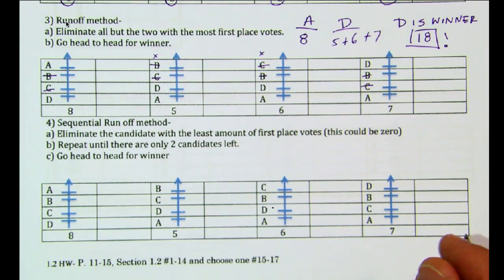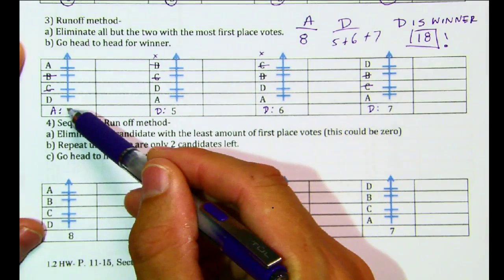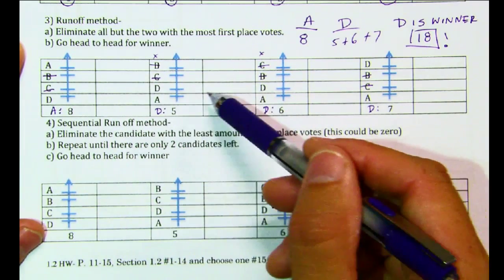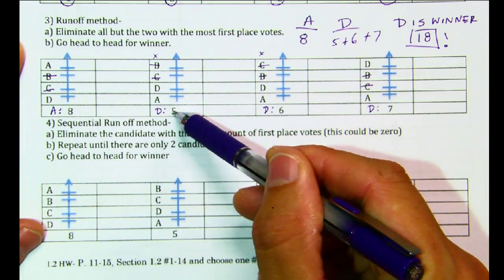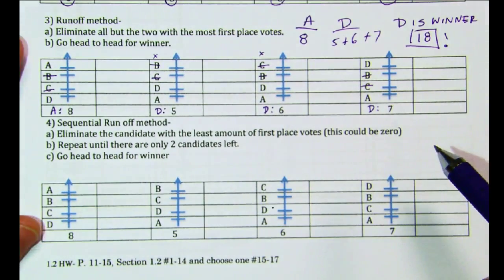You eliminate the two. Well, it depends how many candidates you have. But you leave only two at the end to go head to head. You eliminate all the other ones that have the least amount of first place votes. A is above D here. They get the eight votes. And D is above A here, five votes, and so on.